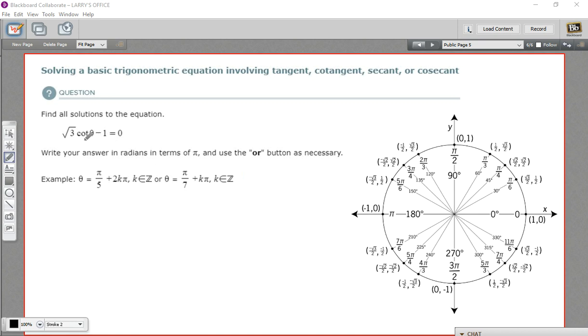The first step here is to solve for the cotangent of theta part. So isolate that on one side of the equation. So I'll start by adding 1 to both sides. And that gives us the square root of 3 times the cotangent of theta equals 1.